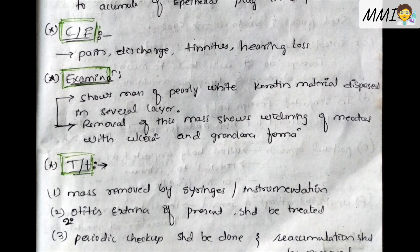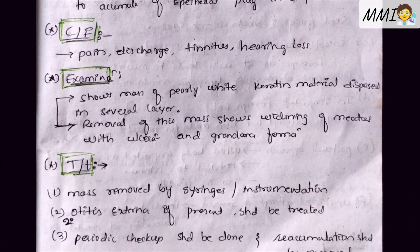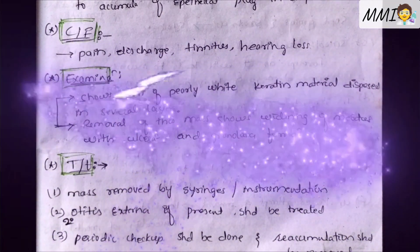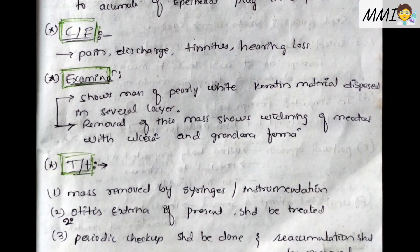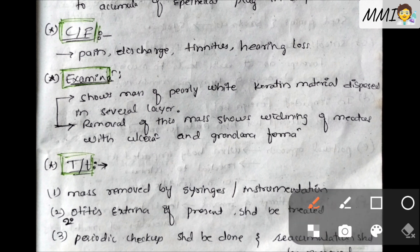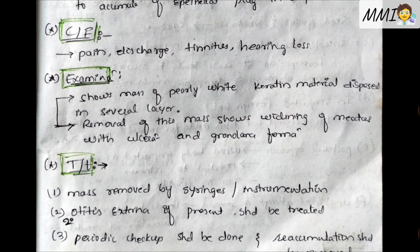Clinical features include pain, discharge, tinnitus, and hearing loss. On examination, it shows a pearly white mass of keratin material deposited in several layers. Removal of this mass reveals widening of the meatus with ulceration and granuloma formation. The external auditory meatus gets widened because of the accumulated mass.